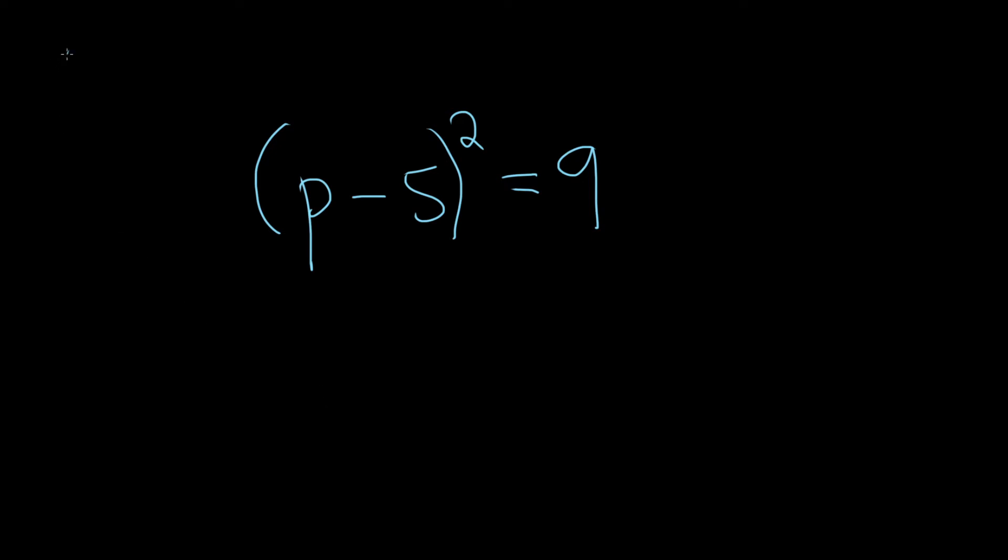So the square root property says if you have x squared and it's equal to a number, which we'll call a, when you take the square root of both sides, you get x equals plus or minus the square root of a. So super important property.